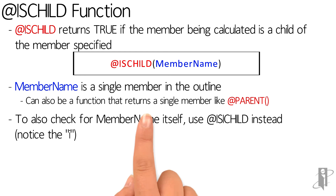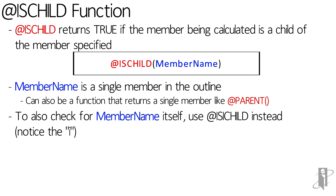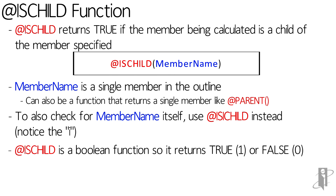If you wanted to check for the member itself — so basically the parent or its children — you would use isichild instead of just isChild. It's a boolean function, so it returns true, otherwise known as one, or false, otherwise known as zero.